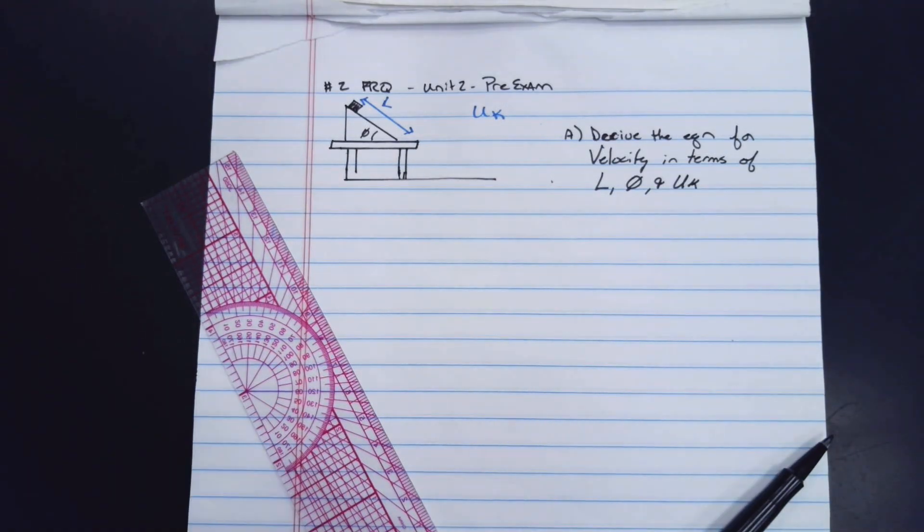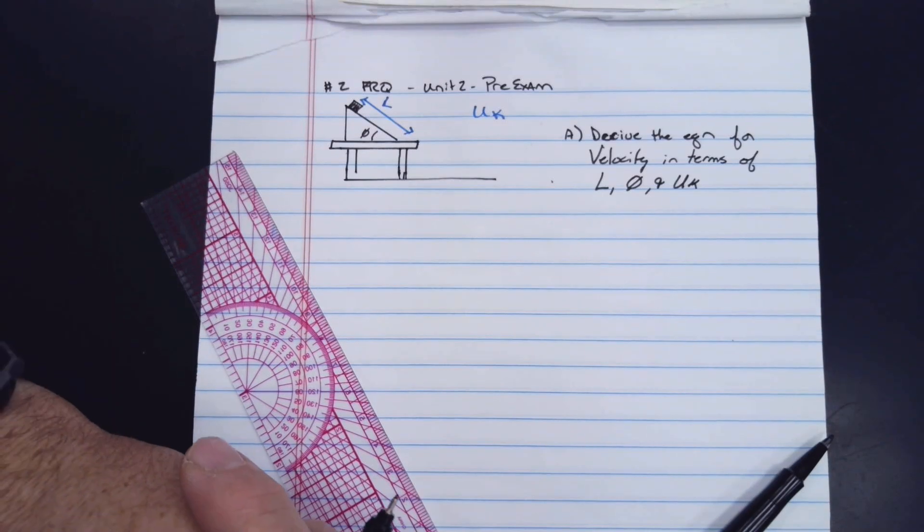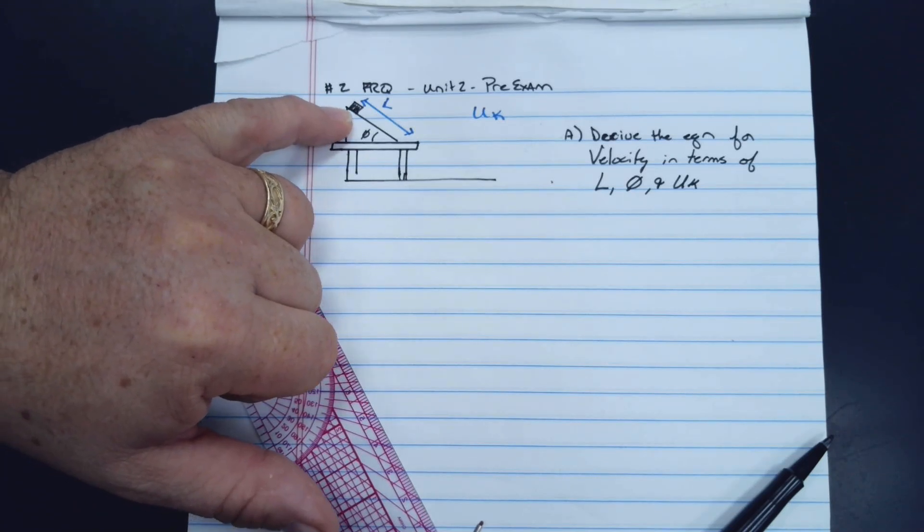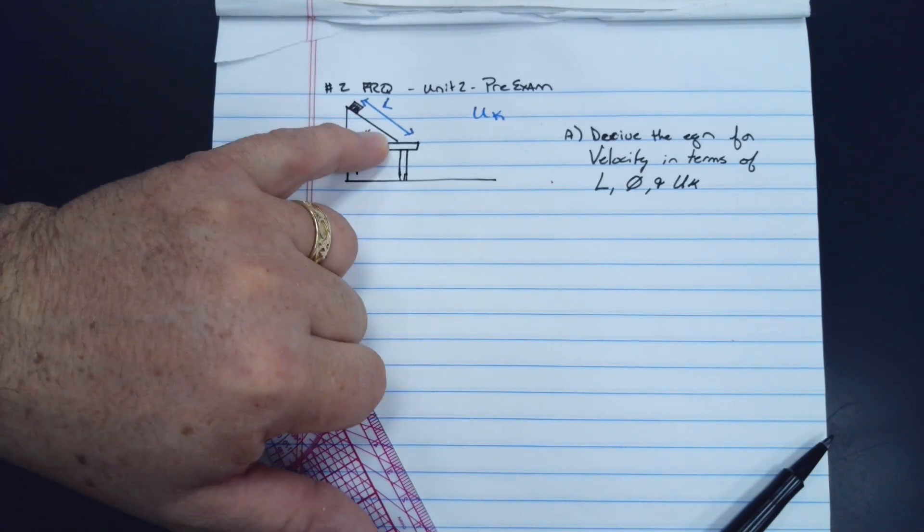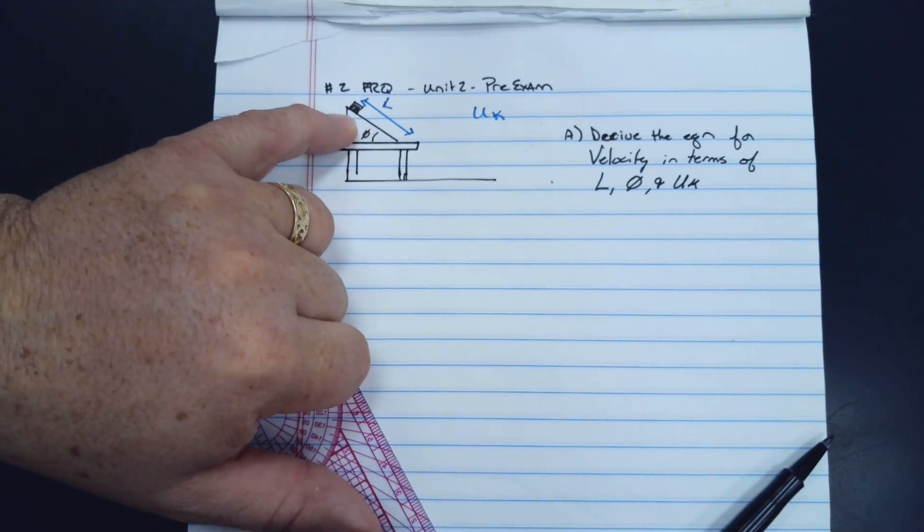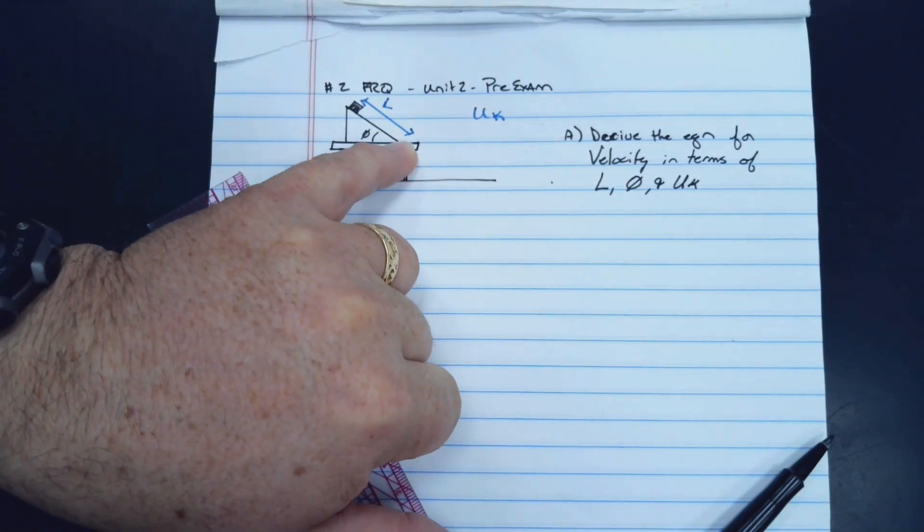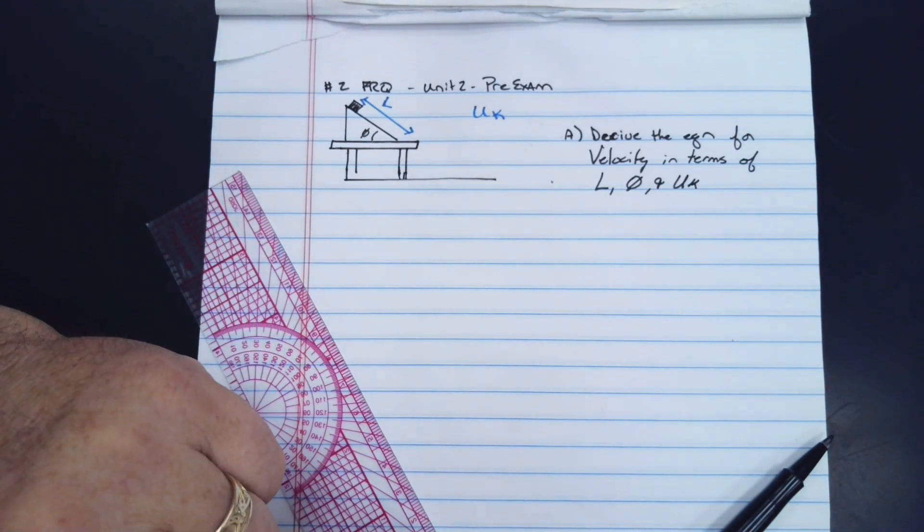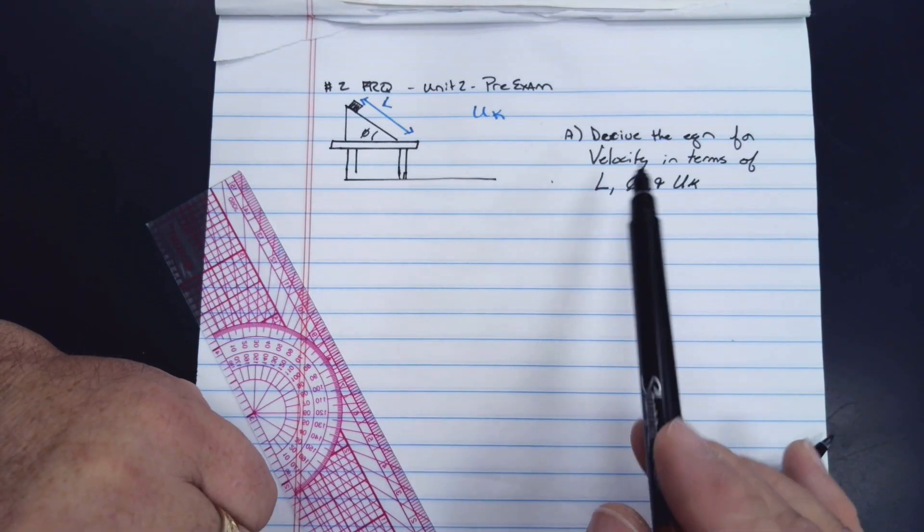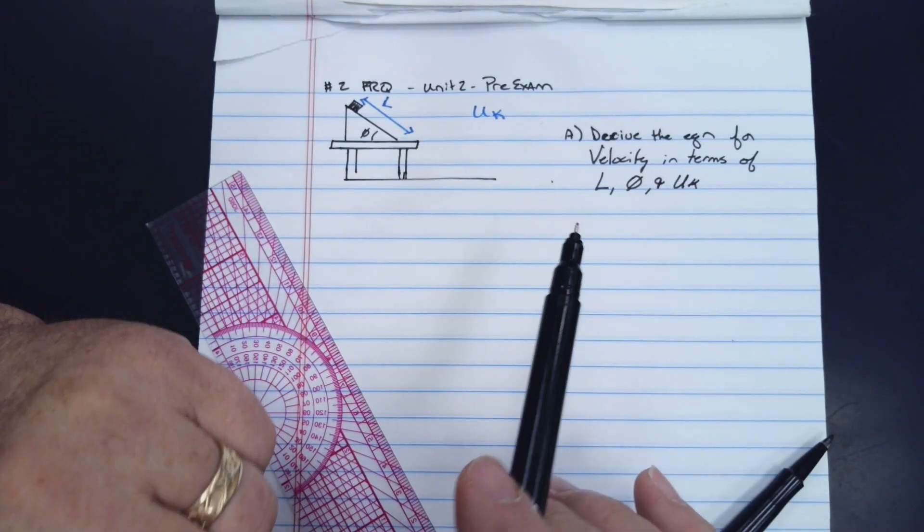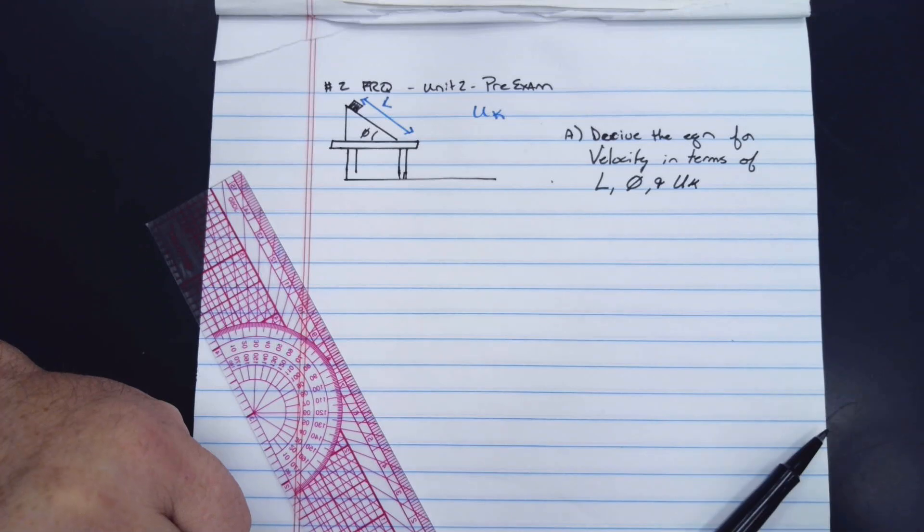All right, this is problem number two, free response from the unit two pre-exam. We have a block sitting on a table at an angle that's going to slide down. This part has friction with coefficient μk, and this part, that little section there, has no friction.